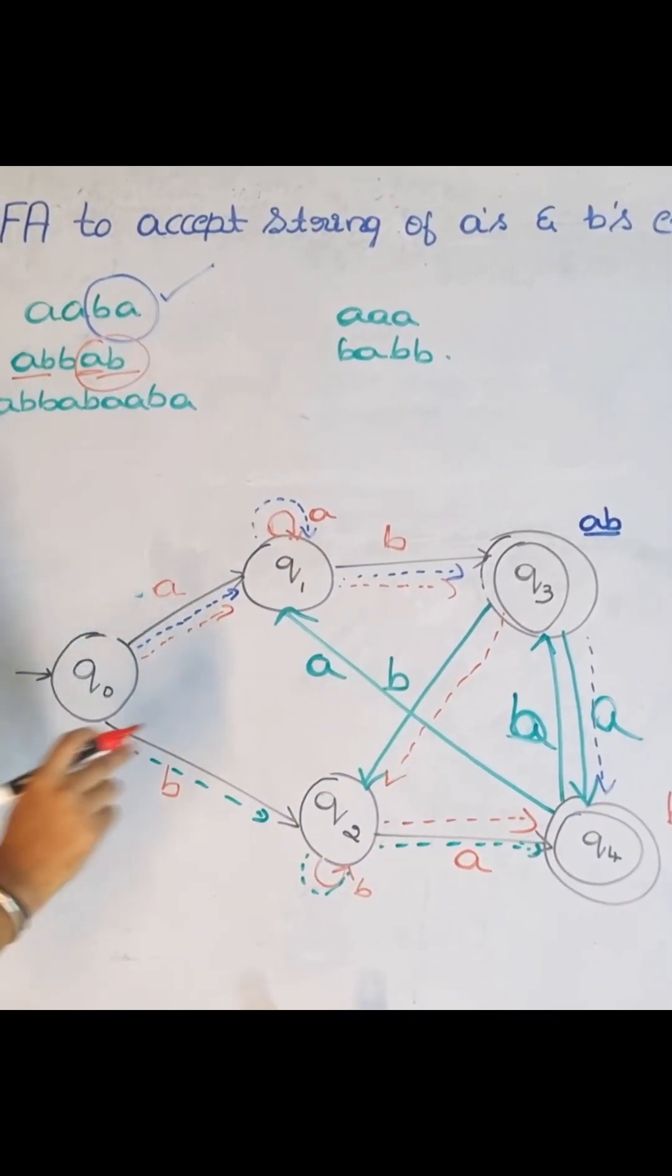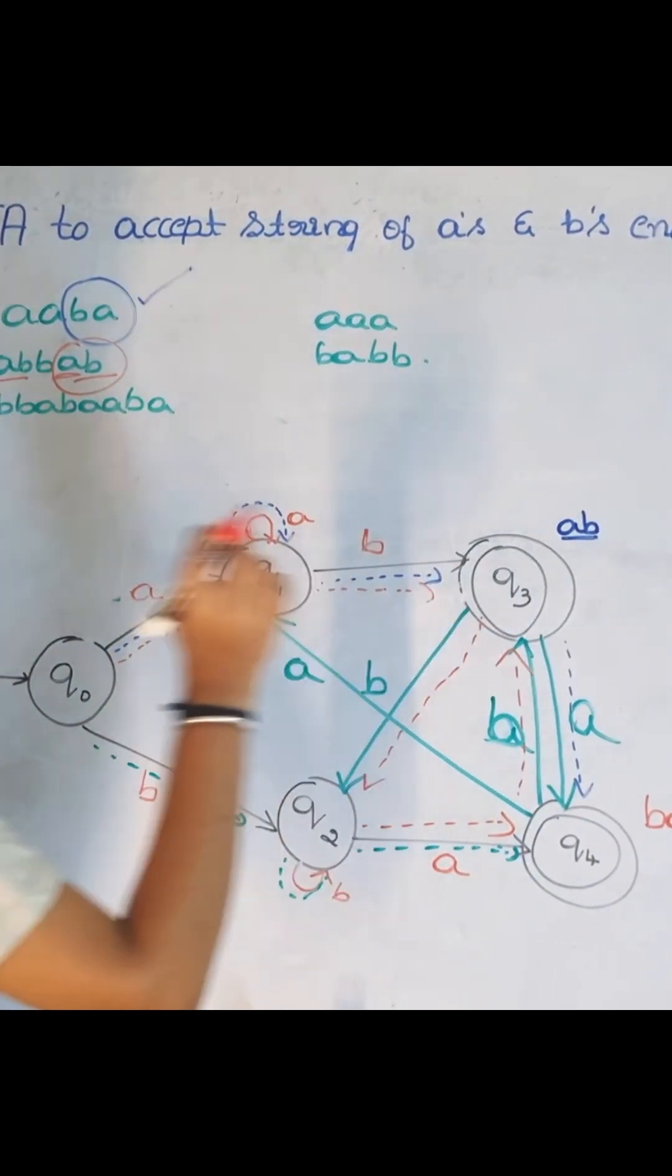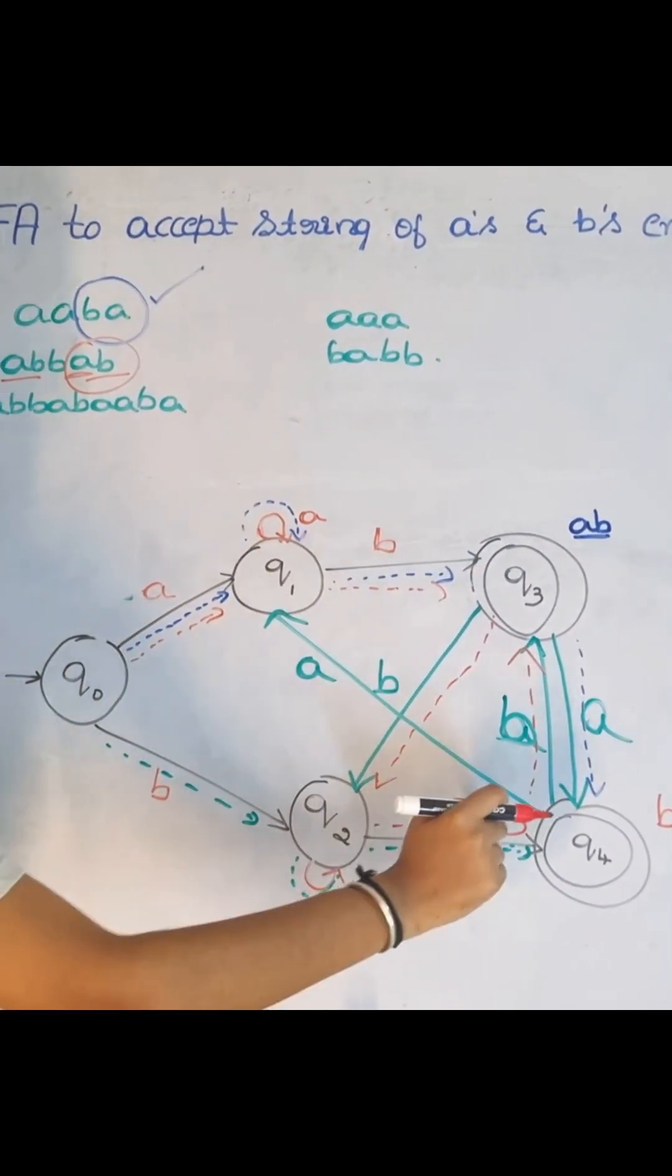AB is the accepting state for Q3. So I have to move back to Q3 state. Look, the circle is like this. So we have to move to Q3 state.